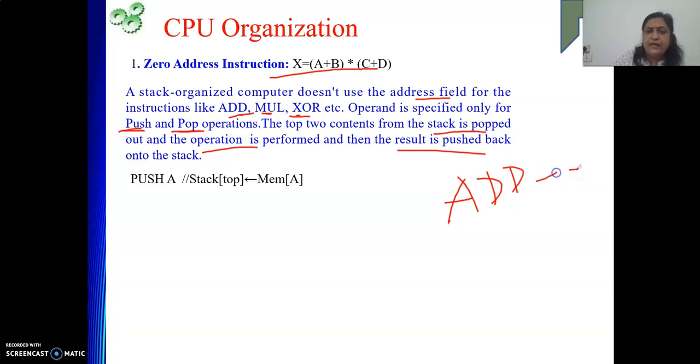But with add, I cannot give any operand. So where are my operands? On the stack. My operands are A and B. Those should be there into the stack. For that, I have to use push instruction. So, push A. What it will do? Stack top equal to memory location A. So A will come here.